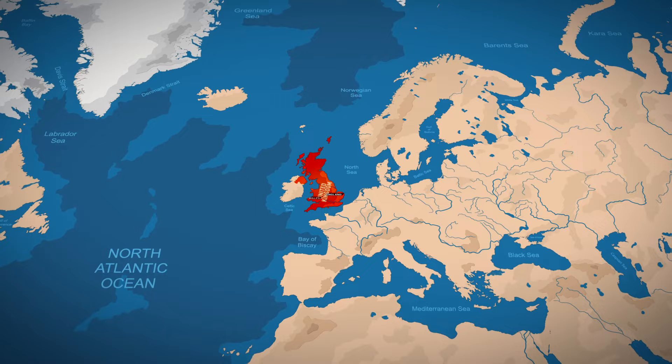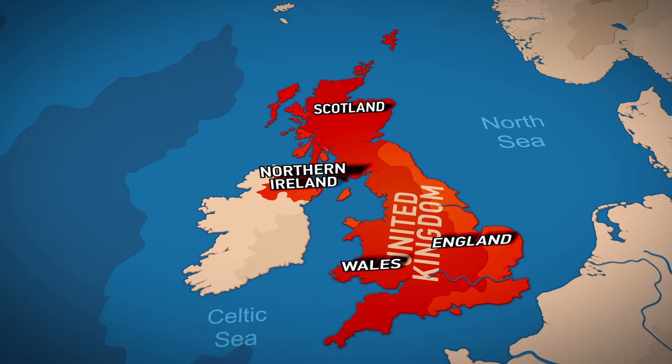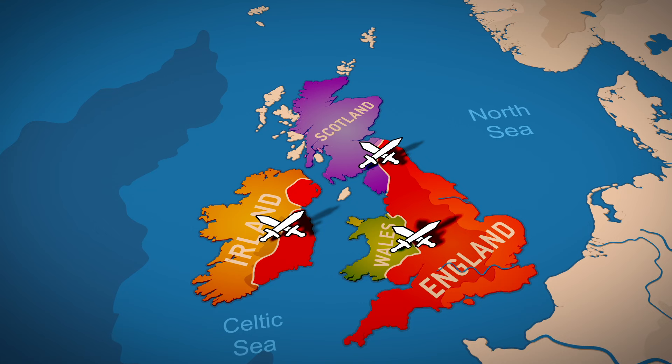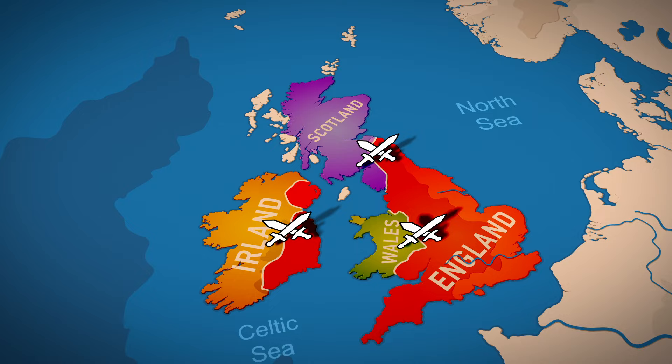Today, we know Britain as a union of lands: England, Wales, Northern Ireland, and Scotland. Throughout history, however, there has been a tough struggle for possession of the British Isles. During the Middle Ages, England attempted to capture neighbouring states, particularly Scotland. That's why the First Scottish War of Independence began.